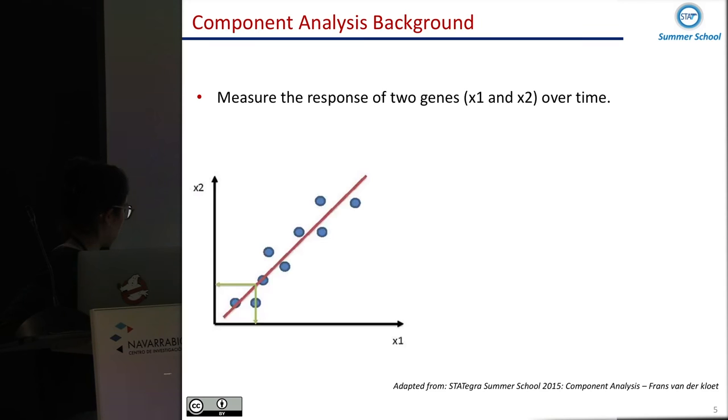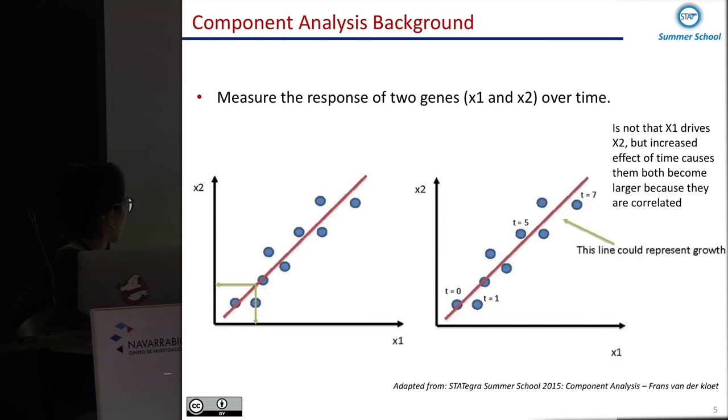Imagine that we have the measure of one gene and then a second gene. Over time we see that when the first gene increased expression, the second gene also increased expression. So we can think that the first gene is driving the expression of the second gene or the other way around. But really what is happening in that case is that increasing the time, then both genes are increasing. So these genes are correlated.